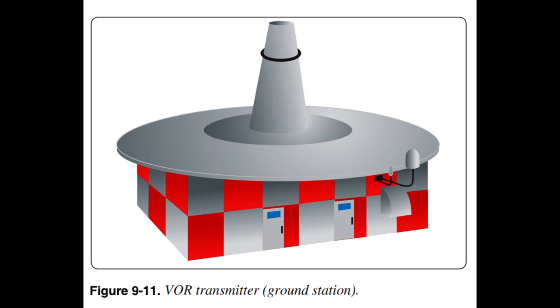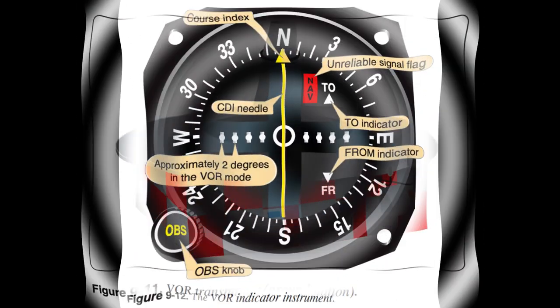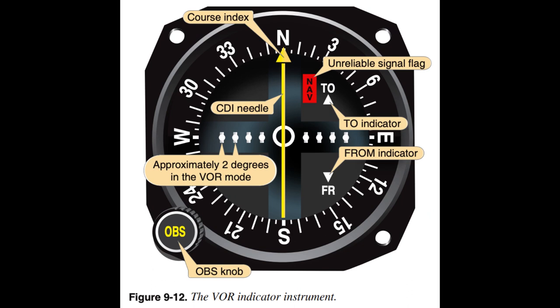VOR facilities are orally identified by Morse code, voice, or both. The VOR can be used for ground-to-air communication without interference with the navigation signal. VOR facilities operate within the 108.0 to 117.95 MHz frequency band; assignment between 108.0 and 112.0 MHz is in even tenth increments to preclude conflict with ILS localizer frequency assignment, which uses the odd tenths in this range. The airborne equipment includes an antenna, a receiver, and the indicator instrument. The receiver has a frequency knob to select any frequency between 108.0 and 117.95 MHz. You should listen to the station identifier before relying on the instrument for navigation.